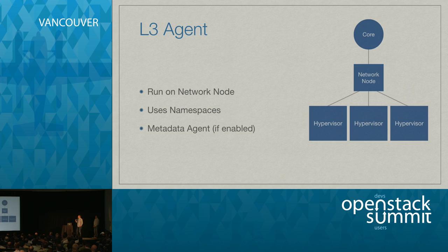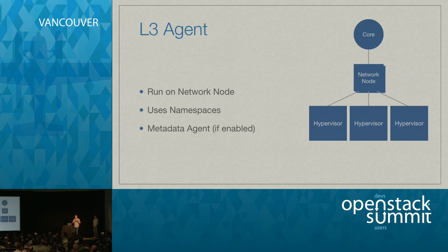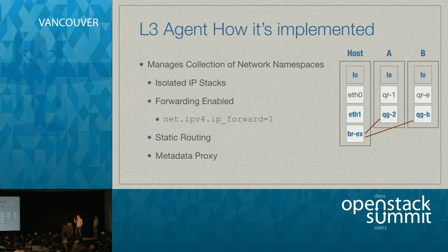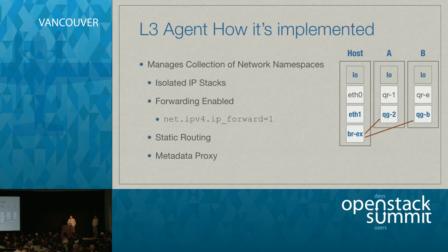The L3 agent typically runs on a network node using namespaces, with the metadata agent enabled. You can have one or more network nodes — we place the logical router on one network node. With HA enabled, we create a second namespace on another network node and use VRRP to sync states, giving you HA support. We use isolated IP stacks with IPv4 forwarding enabled. In Kilo, IPv6 is fully supported as well. You get static routing — BGP or OSPF is not currently supported in the reference implementation. With DVR (Distributed Virtual Routing), we spawn mini L3 agents on each hypervisor, handling NAT for floating IPs on specific instances, giving higher north-south bandwidth and improving east-west routing.